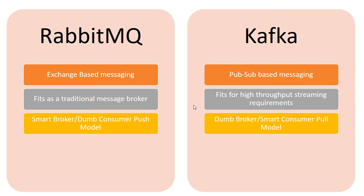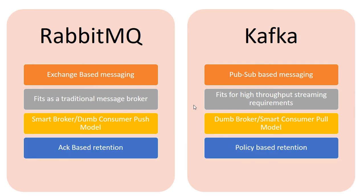Another important point is that in RabbitMQ, messages once consumed from the queues get removed. You can set some expiry before consumption, but in general RabbitMQ uses acknowledgement-based retention — once an acknowledgement is received, the message is removed from the queue as it has been consumed and is no longer needed.